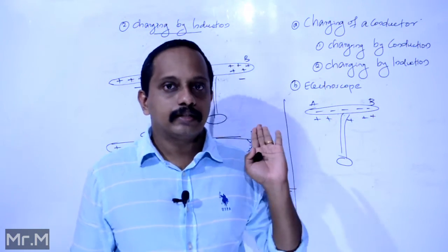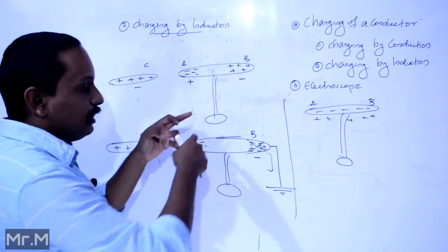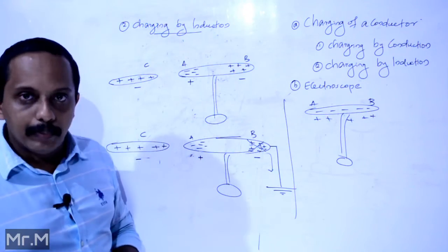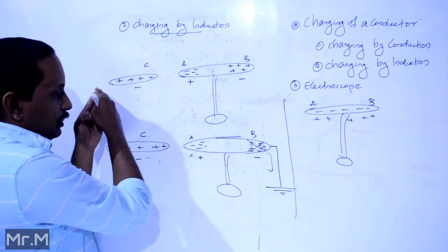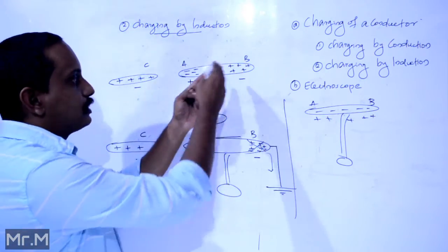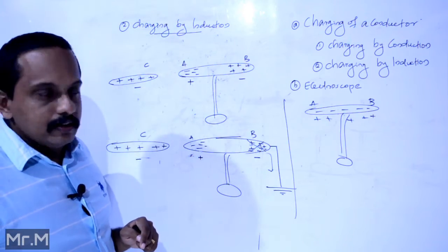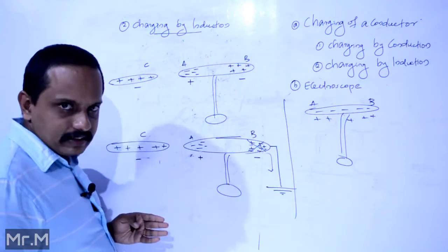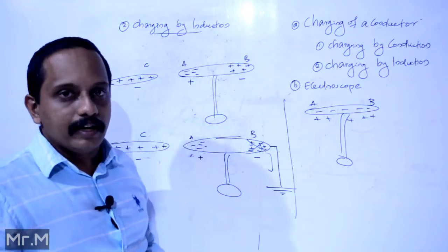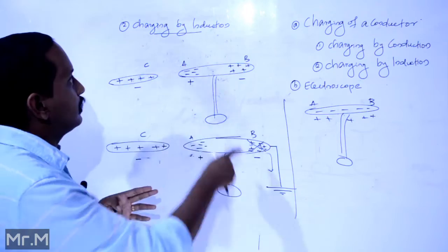Charging by induction: Consider a rod AB which is to be charged, placed on an insulating stand. Then a charged object C is brought near to end A of the rod AB. Therefore, the negative charges are accumulated at end A while the positive charges are accumulated on the other side, because like charges repel and unlike charges attract. Now end B is earthed. When B is earthed, the positive charges on the B side are neutralized by electrons from the earth. So the rod becomes negatively charged. This is called charging by induction.